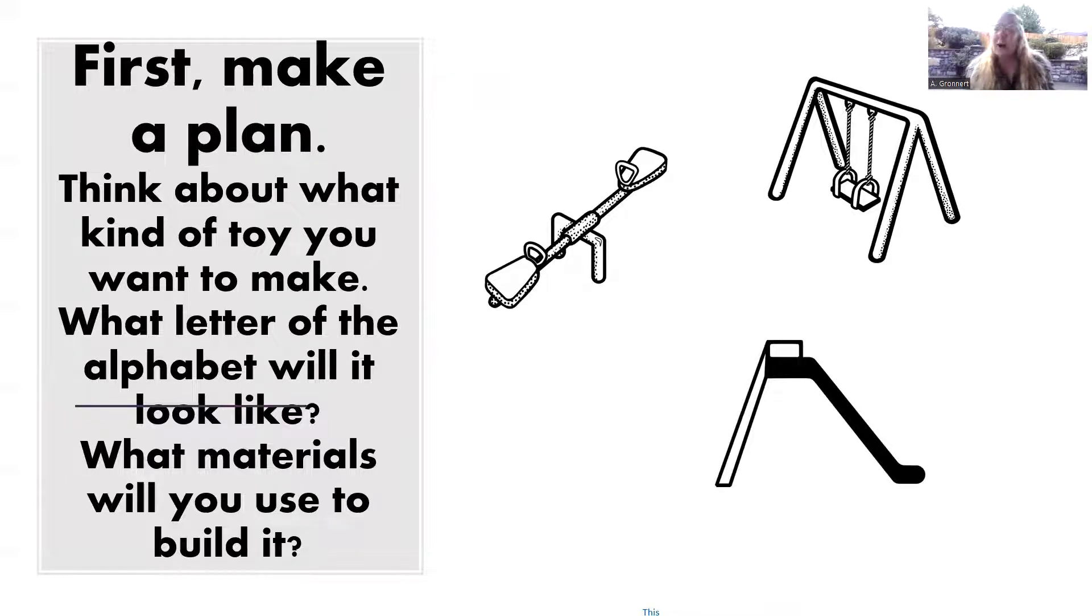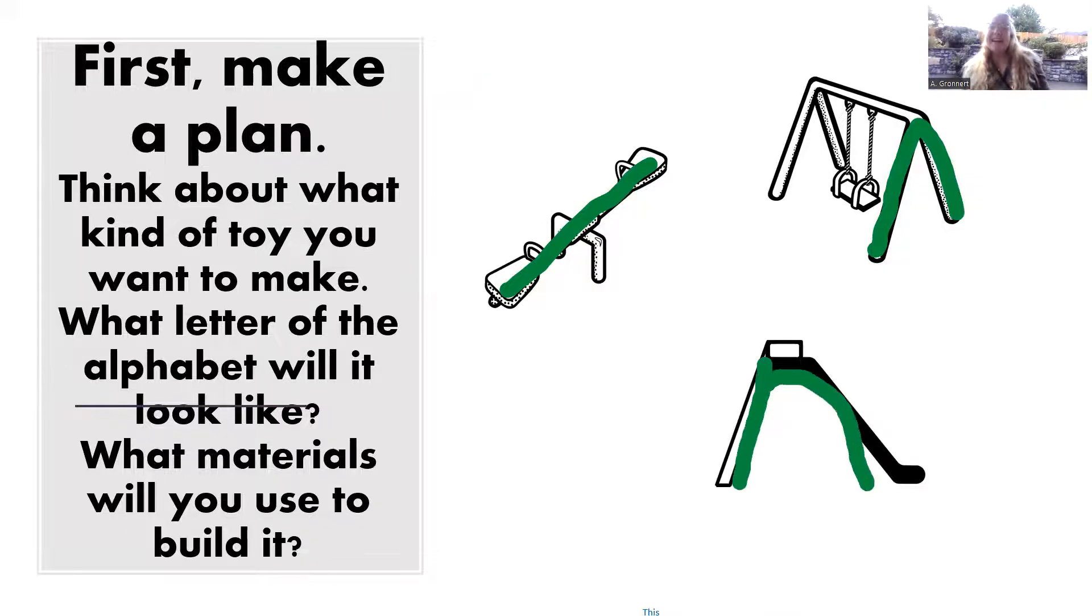Here are just a few ideas. Maybe I'll make a toy that looks like the letter L. Or I could make an upside down V. Or maybe a slide that looks like a letter N.